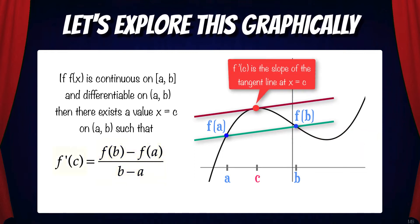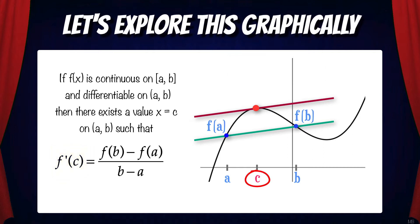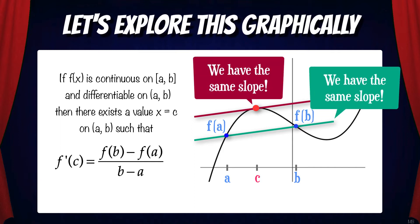f prime of c is the slope of the tangent line at x equals c. So what the mean value theorem is saying is that there's a value x equals c within the interval where the slope of the tangent line is equivalent to the slope of the secant line. As you can see in this diagram, we have two parallel lines — the slope of the line at x equals c is parallel to the slope of the secant line from a to b.